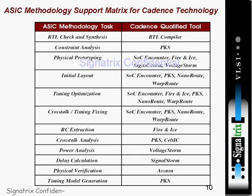For RC extraction, Fire and Ice is used. For physical verification, Asura is used. For cross-talk analysis you can use PKS and Cell IC. For power analysis, Voltage Storm is used. For delay calculation, Signal Storm is used. For timing model generation, PKS is used. This completes the full ASIC design flow and the Cadence tools supporting it.